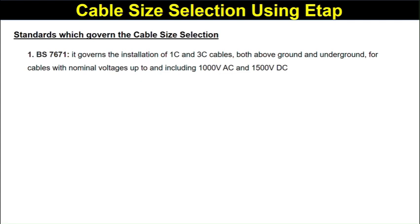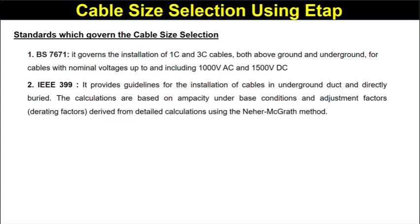IEE 399 provides guidelines for installation of cables in underground ducts and directly buried. The calculations are based on ampacity and base conditions and adjustment factors, derived from detailed calculations using the Neher-McGrath method.